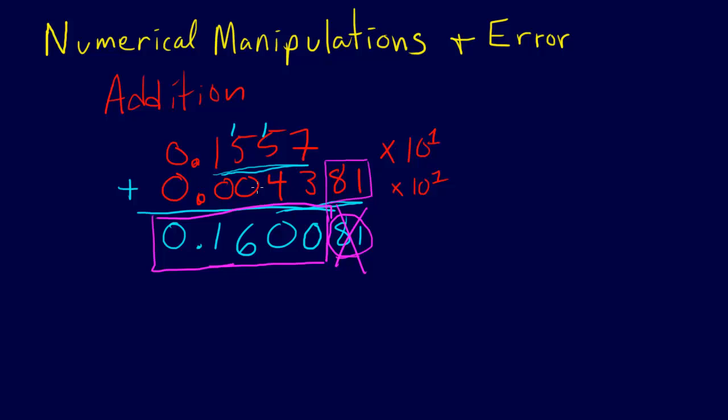So we can see how adding two numbers, in particular a large and small number, can lead to a loss of precision and really a loss of information. There's this information about this 8-1 that we used to have, and we just don't have it anymore.